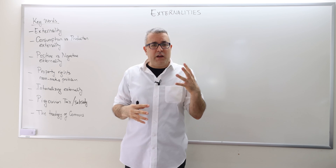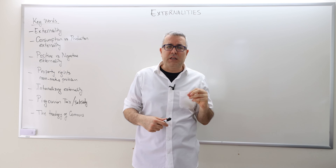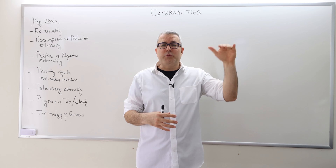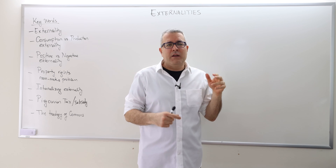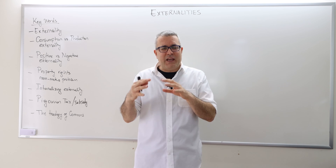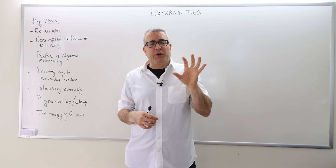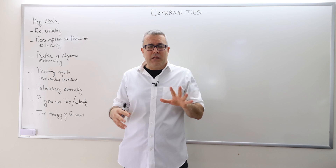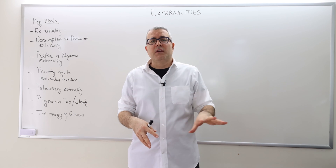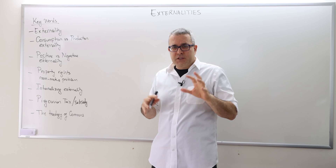Our very important theorem — the first fundamental theorem of welfare economics — says that in this economy the equilibrium outcome, meaning the total goods supplied and demanded, is always Pareto efficient. Meaning if you try to make some agents better off, it's going to hurt some other agents — there's no win-win situation for everyone.